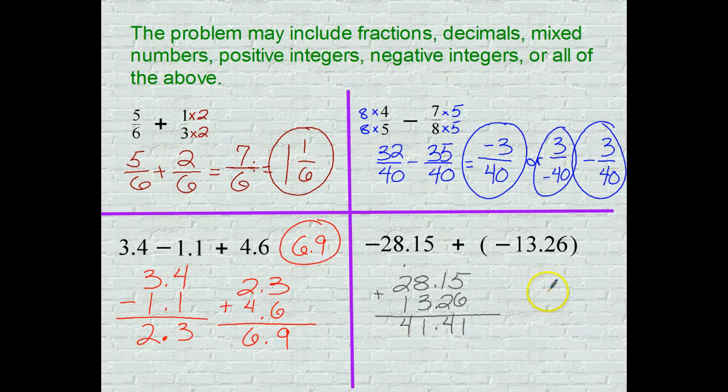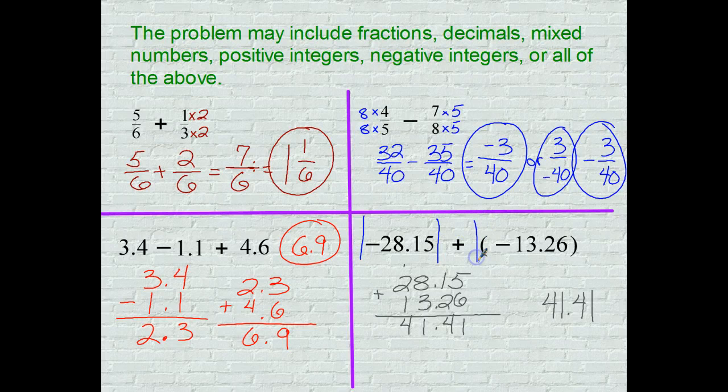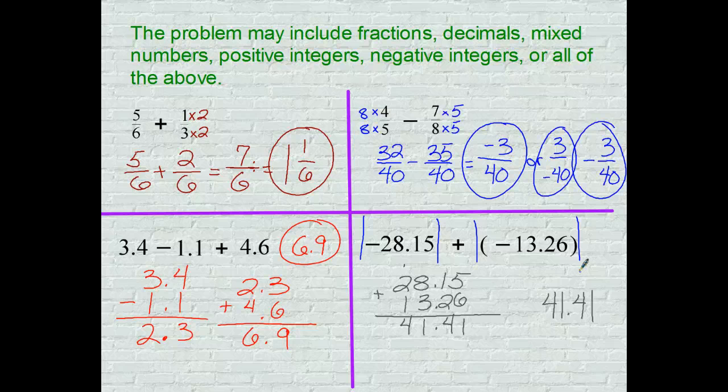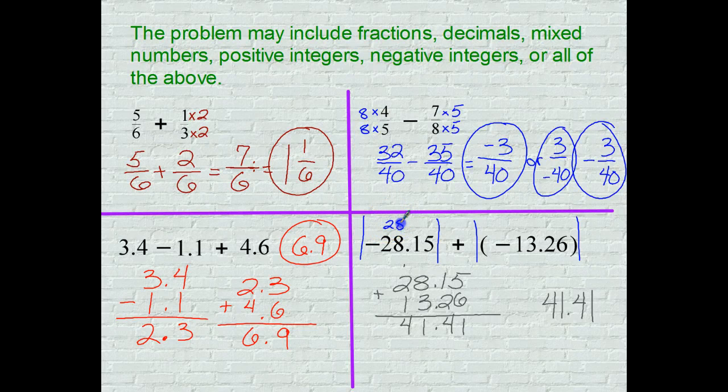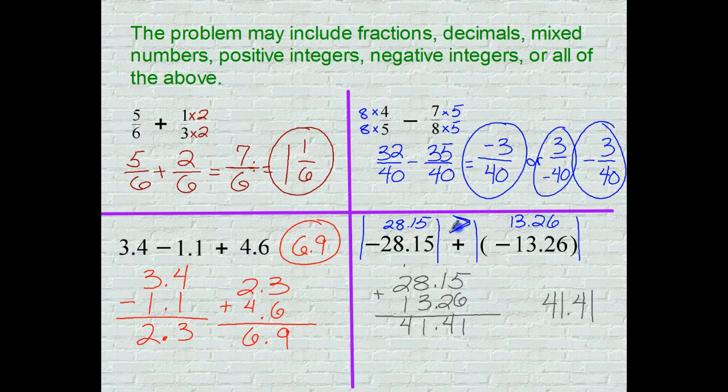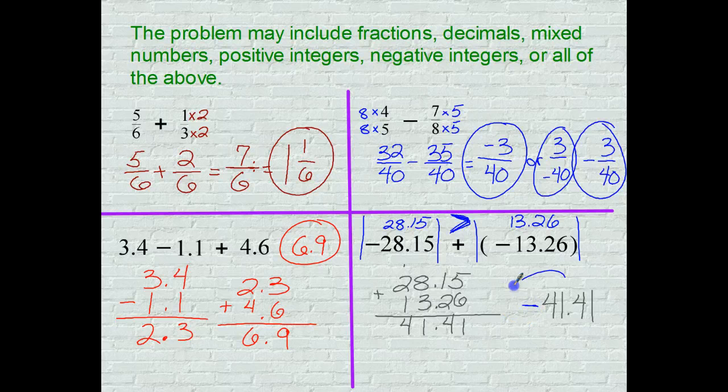And I come up with some type of forty-one and forty-one hundredths. Now I have to play that absolute value game. So I take the absolute value of both integers, or both rational numbers, and I see that the absolute value of negative 28.15 is 28.15, and this one is 13.26. And who's bigger? This one is bigger, so I'm going to steal the sign of this bigger absolute value, which was negative, and we have a negative answer.